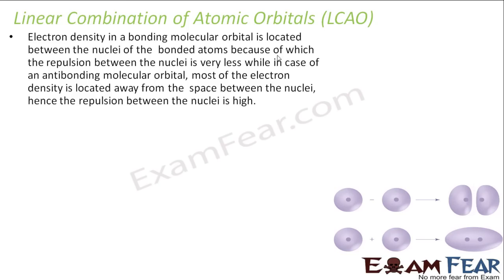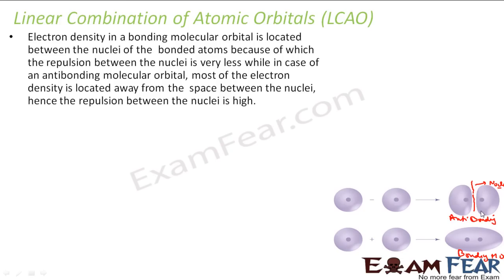The electron density in the bonding molecular orbital is located between the nuclei. So with my two nuclei, the electron is around this region, meaning the repulsion between the nuclei is very low, and thus it is stable. In the antibonding molecular orbital, there is a nodal plane. Most of the electron density is away from the nuclei, so there is high repulsion between the nuclei, and thus it is unstable.